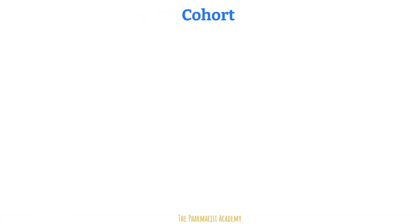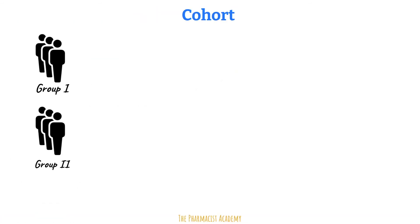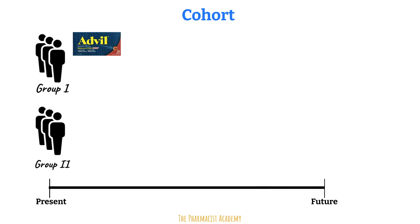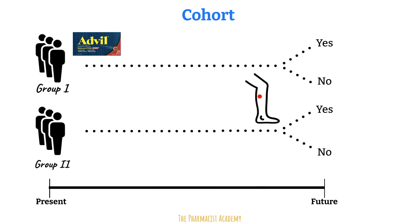A cohort study is slightly different. We still have two similar groups, but one of the groups is exposed to the risk factor of interest — let's assume in this case it's Advil. This is occurring in the present. So now we will follow these patients prospectively to see if they develop the disease, for example, a DVT.